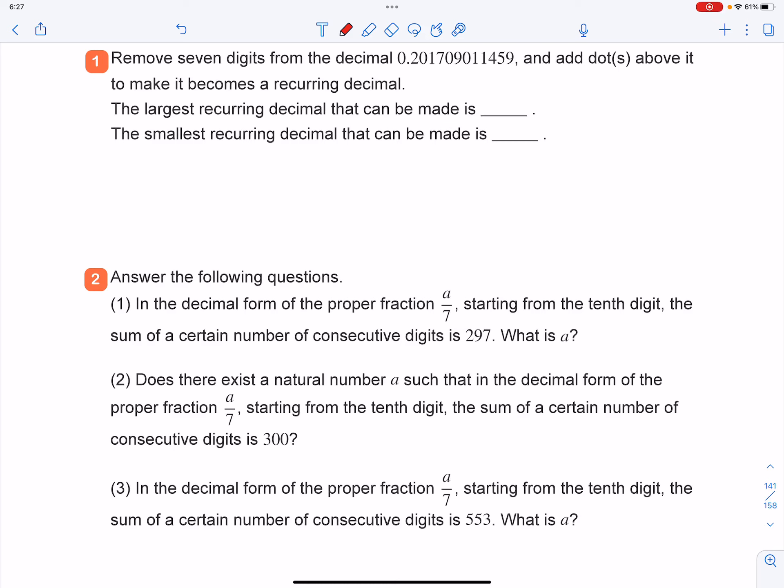Extensive access question number one of this and eight, remove seven digits from the decimal and add dots or one dot above it to make it becomes a recurring decimal. Question number one, what is the largest recurring decimal that can be made?